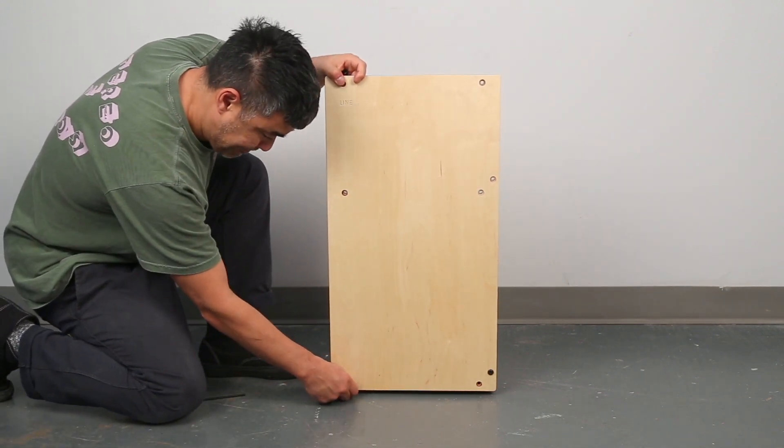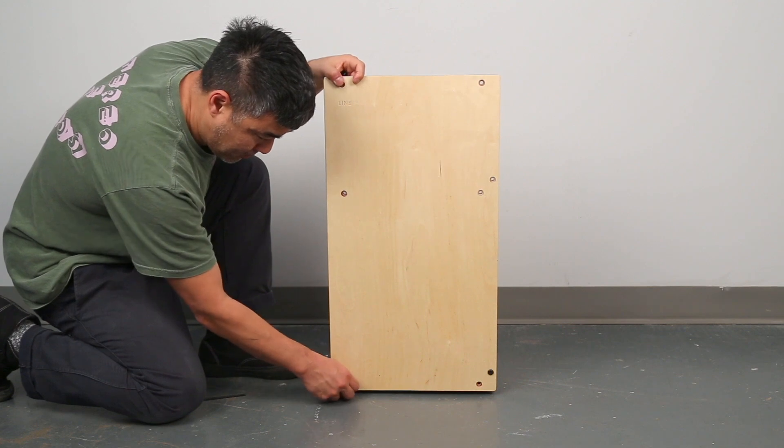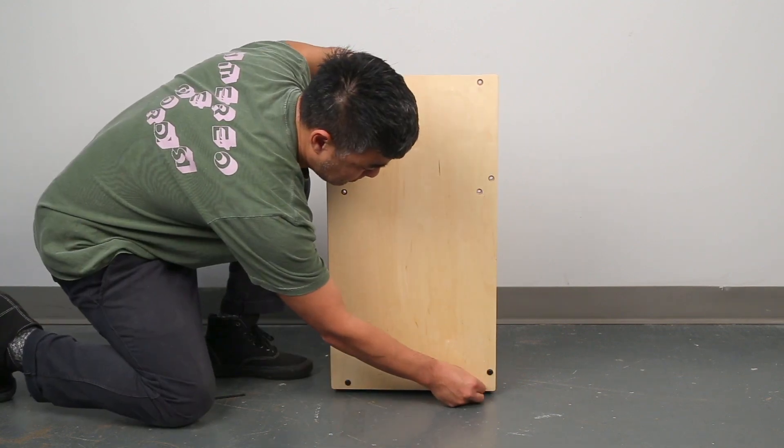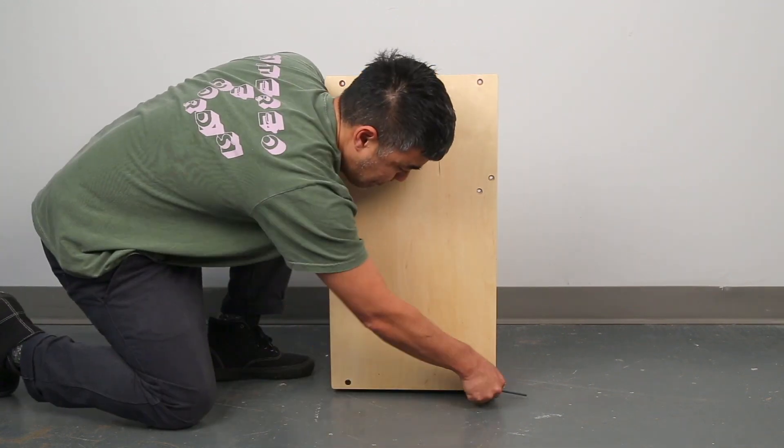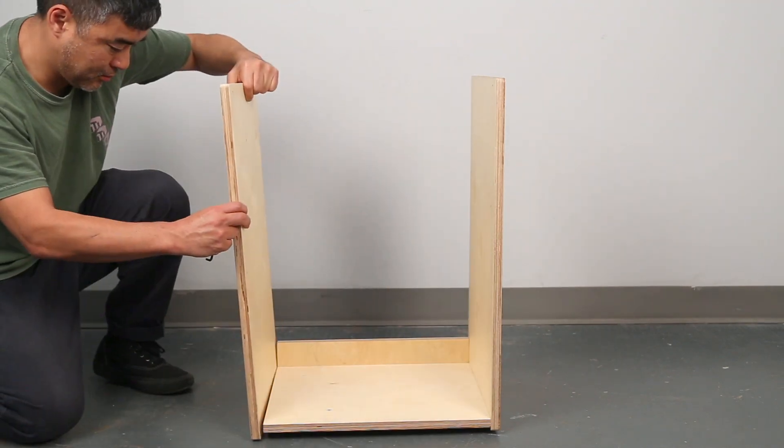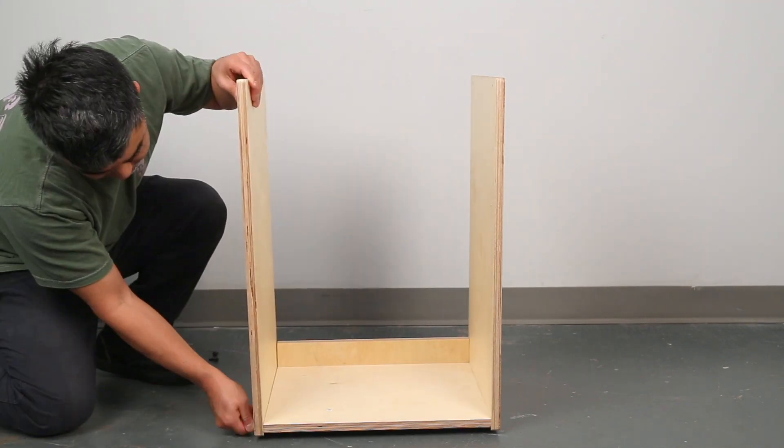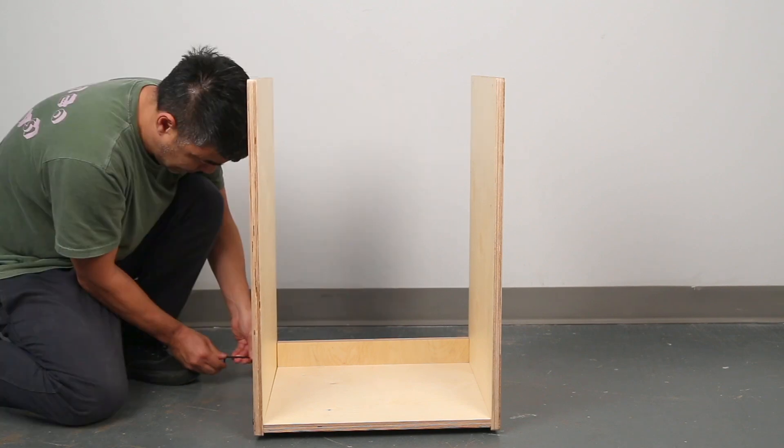Now lift up the other side and screw in number two. Screw in number three, then tighten all the screws. Making sure the recessed screw holes are facing outward, repeat on the other side. Make sure to keep the same order.